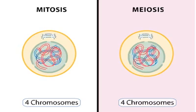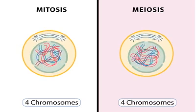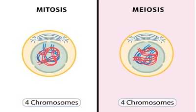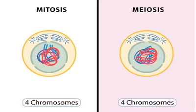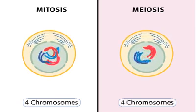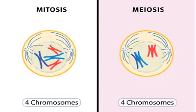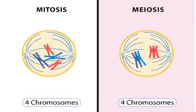Let's compare mitosis with meiosis. Before both mitosis and meiosis, the chromosomes are duplicated. As the cell enters either mitosis or meiosis, the chromosomes condense.